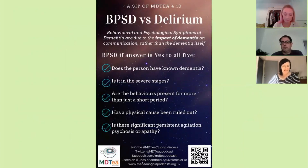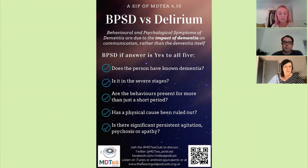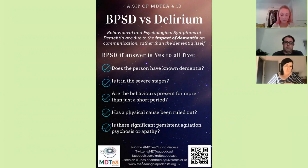A quick word on BPSD — behavioural and psychological symptoms of dementia. In people living with dementia, these symptoms can sometimes be really hard to differentiate from delirium, but these five questions can help. BPSD is far more likely if you answer yes to all five: Does the person have known dementia? Is it in the severe stages? Are the behaviours present for more than just a short period? Has a physical cause been ruled out? And is there significant persistent agitation or psychosis? We've previously done a full podcast episode on BPSD and several on dementia and delirium — links are below the video.